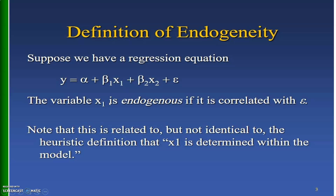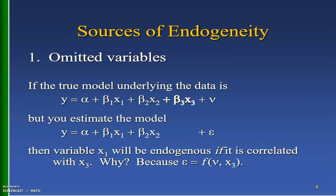Let me start with the definition of endogeneity. Suppose we have a regression model in which y is equal to alpha plus beta_1 x_1 plus beta_2 x_2 plus epsilon. The variable x_1 will be endogenous if it is correlated with epsilon, that is the error term. There are a number of sources or causes of endogeneity.